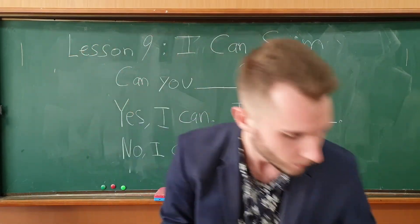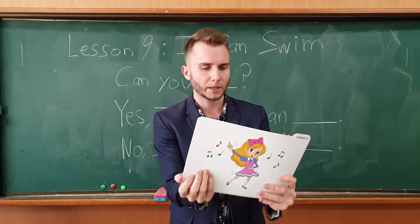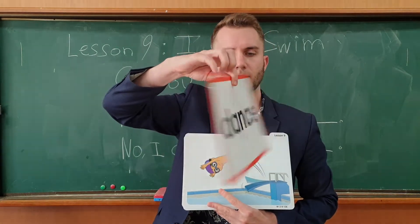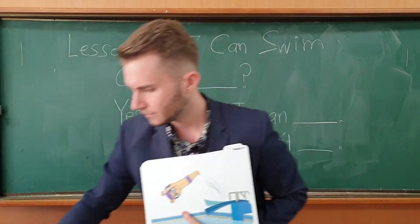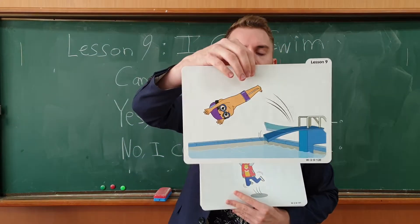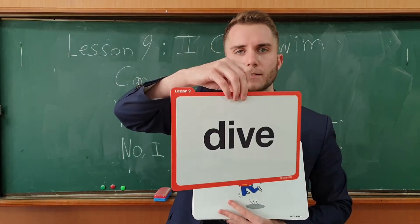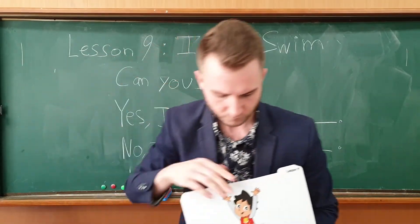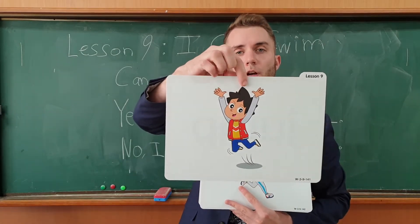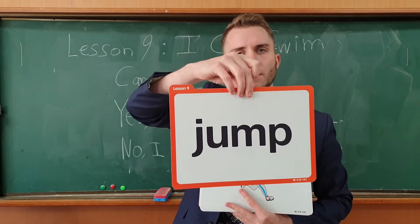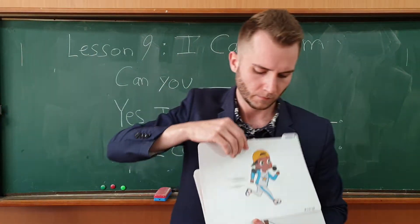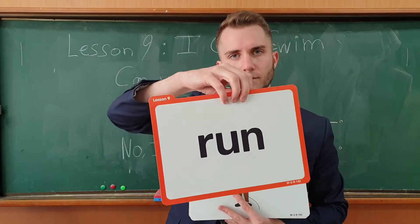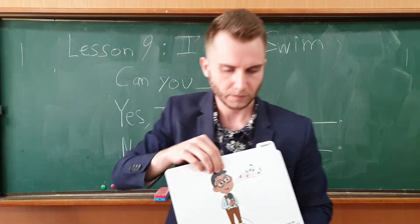First let's do our picture cards and practice. First we have 'dance,' next is 'dive,' next is 'jump,' and next is 'run' — check the spelling.